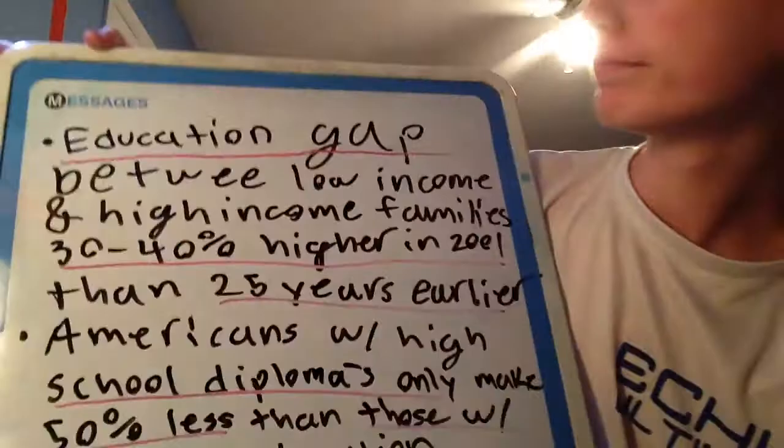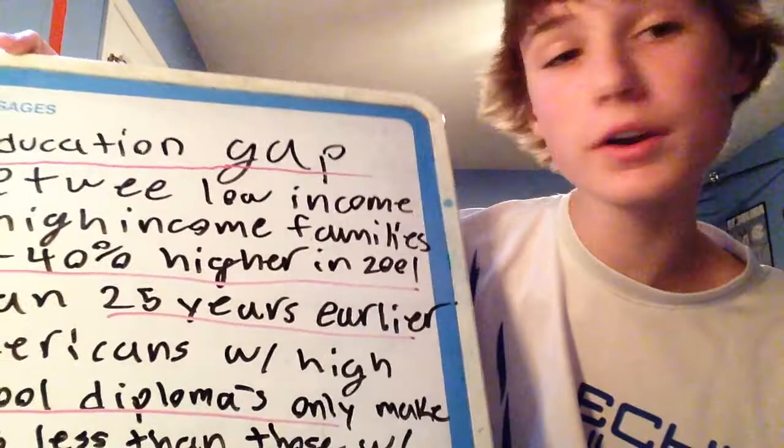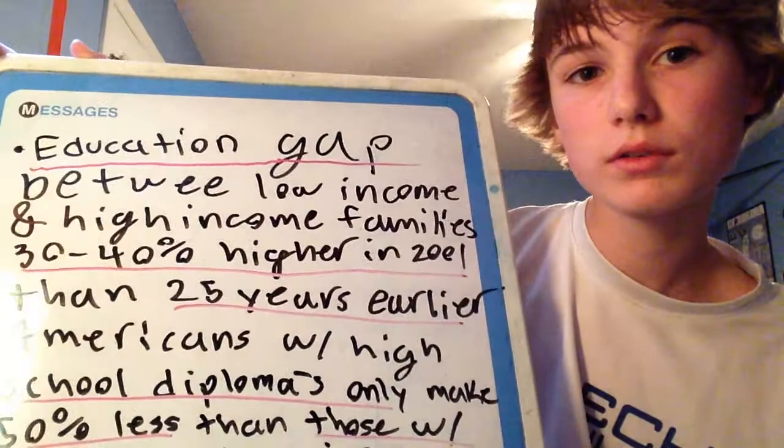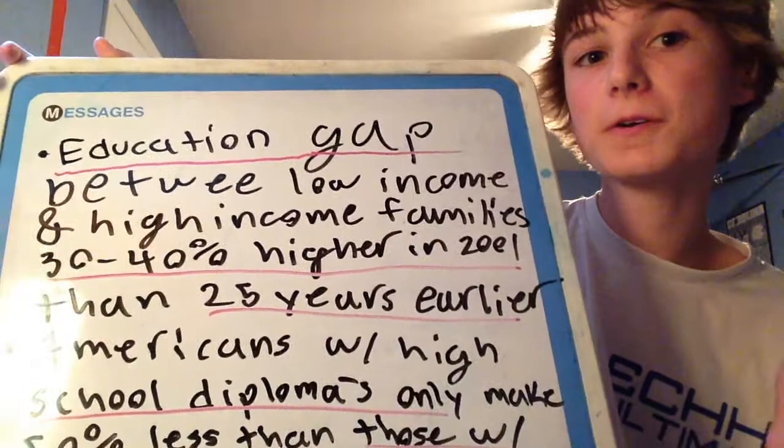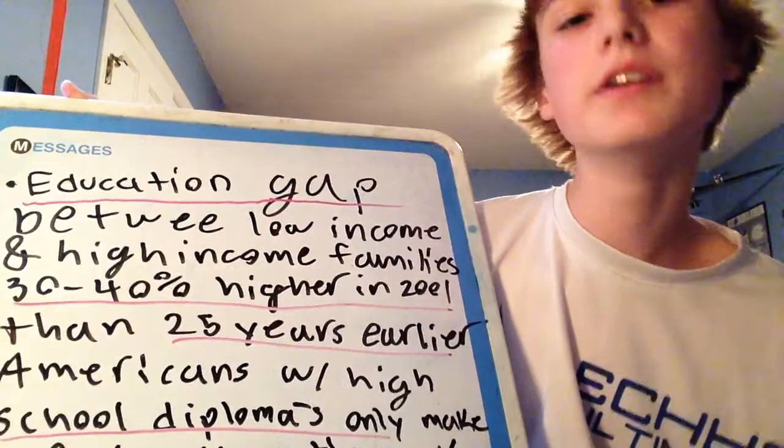Looking at the causes of this reform movement: there was an education gap between high-income and low-income families — in fact, 30 to 40% higher in 2001 than in the previous 25 years. Americans with high school diplomas only, who went to get jobs, made on average 50% less than those with a college education. So college education is pretty important, and not enough people are getting it. There was also an overall want for equal opportunities for everyone, regardless of their financial state.